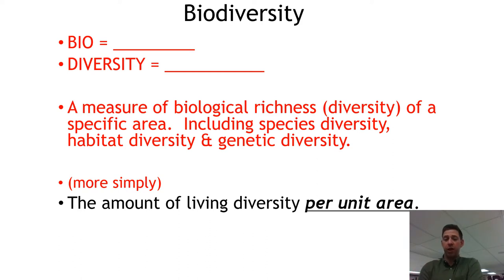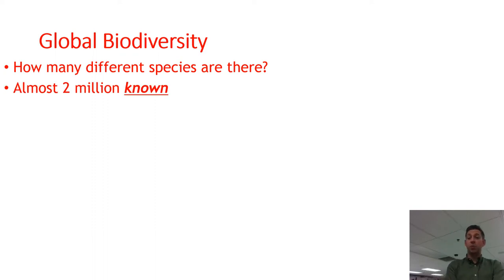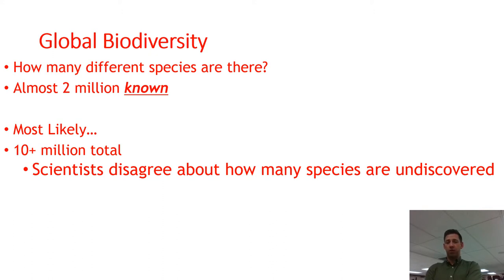Globally, how many species are there? There are about 2 million cataloged species — meaning 2 million species that have been identified, named, and officially recognized. Yet there are probably at least 10 million out there. If you go to a part of the rainforest, cut down one tree, and take samples of all the mosses, algae, lichens, insects, fungi, and microscopic bacteria living on it, that one individual tree might yield 20 to 50 species we never knew about.